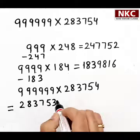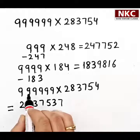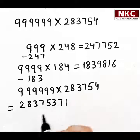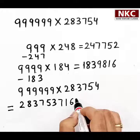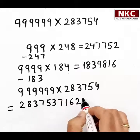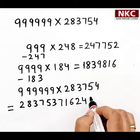Now see, 9 minus 2 is 7 right at the end. 9 minus 8 is 1. 9 minus 3 is 6. 9 minus 7 is 2. 9 minus 5 is 4. And 9 minus 3 is 6.